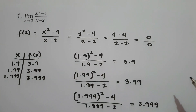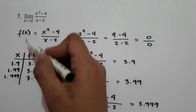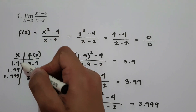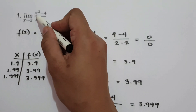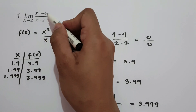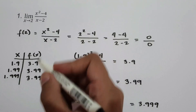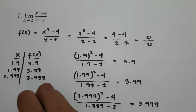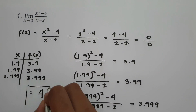As you can see, as x approaches 2, the expression x squared minus 4 all over x minus 2 approaches 4. And this will be our answer.